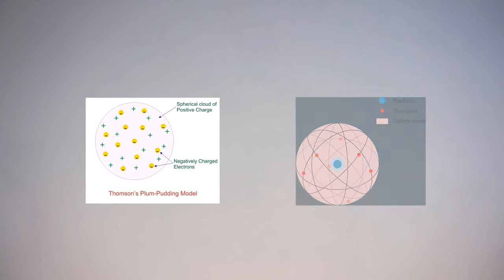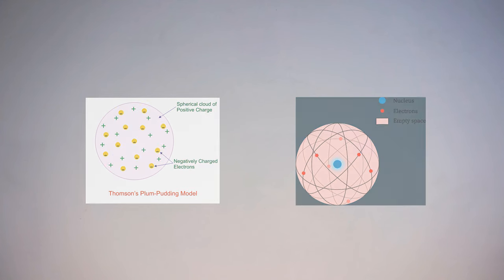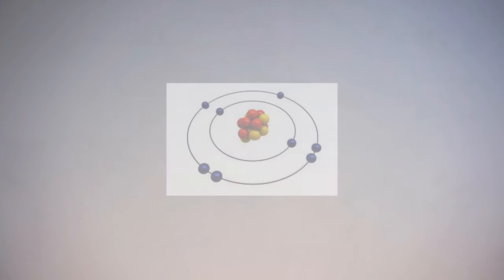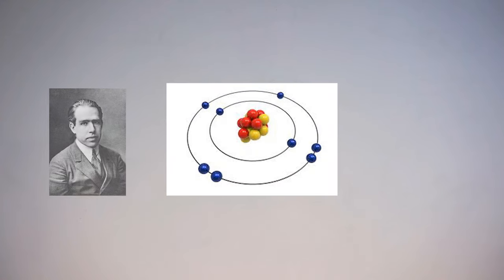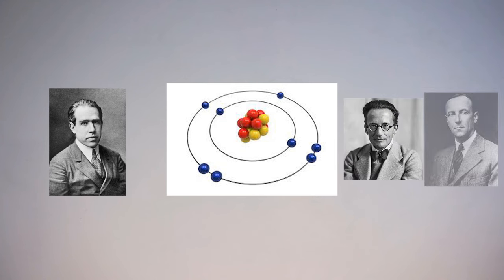Before we begin, it's really important to note that the model we use to represent the atom has undergone several evolutions throughout the last 200 years. Different models proposed early on included the plum pudding model and the nuclear model. As scientists performed more experiments to understand atoms, so too did the model change throughout history. What we use today is basically a derivative of Niels Bohr's model, with some modifications made by scientists such as Schrödinger and Chadwick.